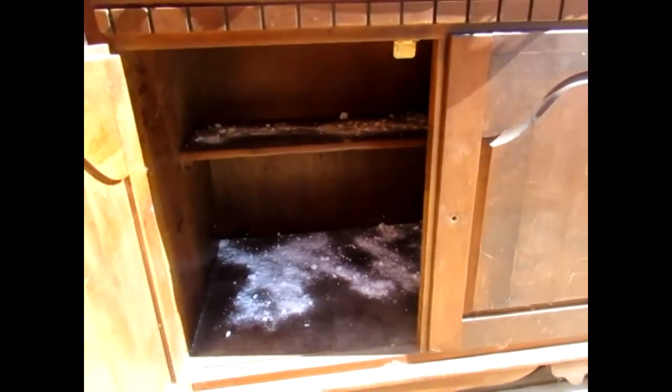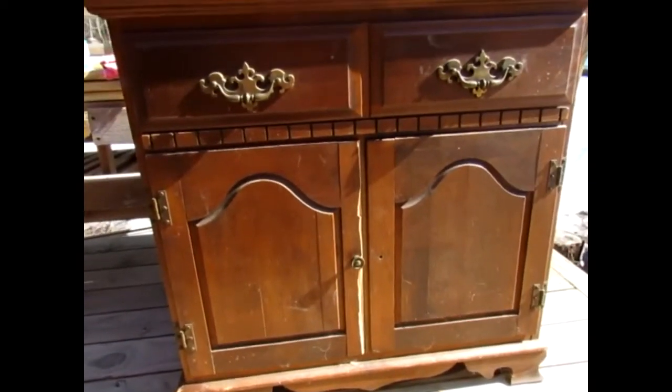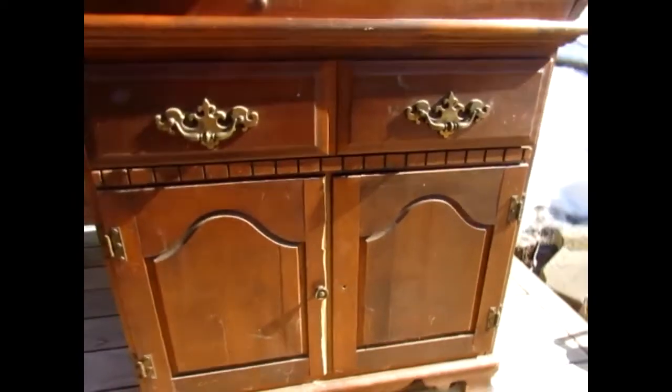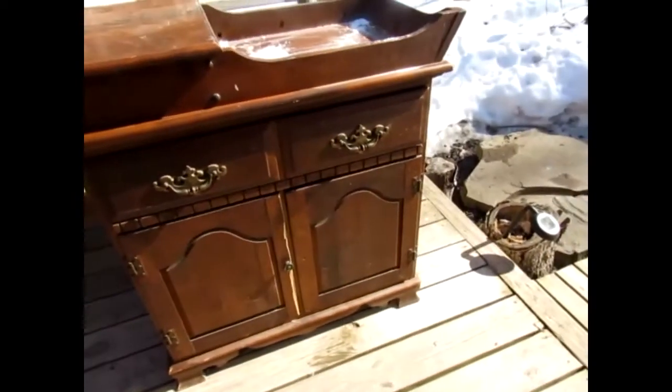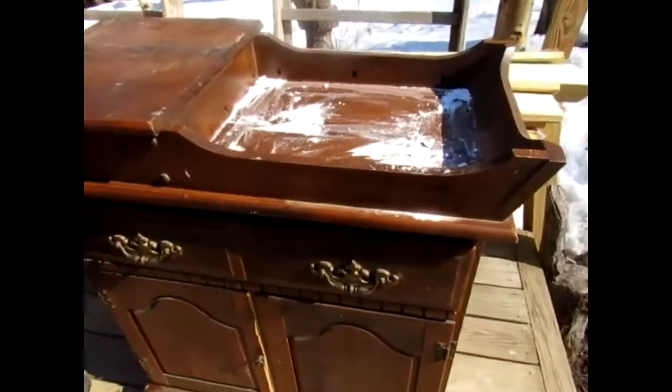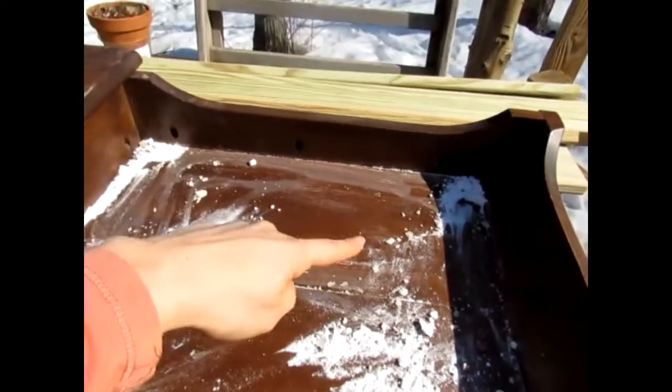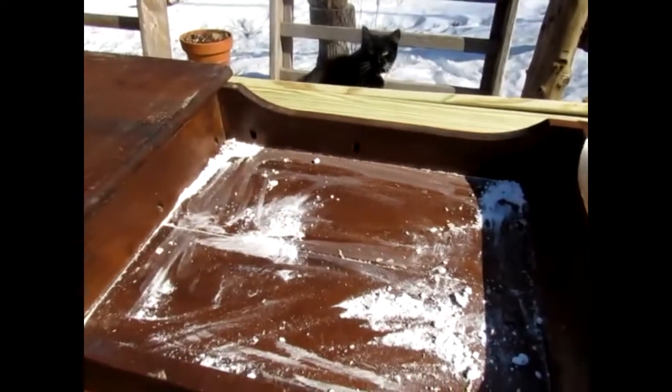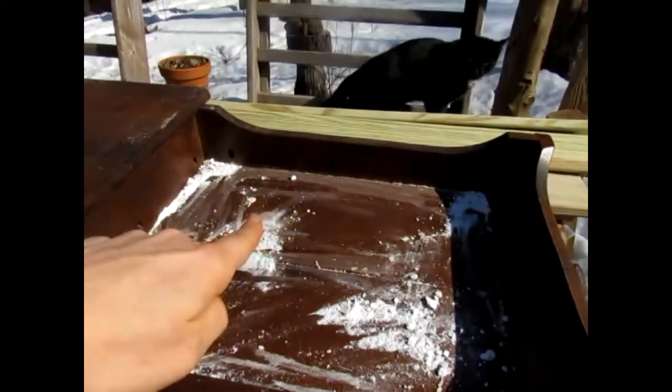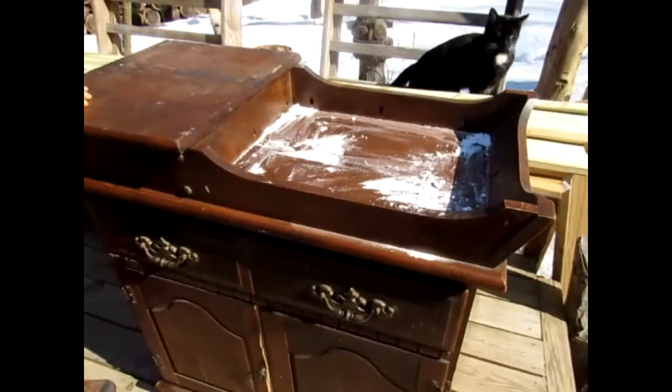Next step is we're gonna wipe the whole thing down with vinegar. It's already sitting in the sun to try to get this thing smelling nice and looking nice. Then we'll show you how we're gonna turn this part, which is the dry sink part, into an actual sink by cutting a hole, putting the sink in, and adding our makeshift plumbing situation.